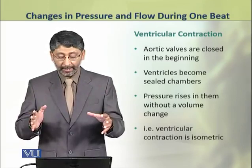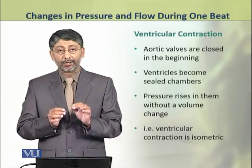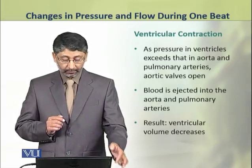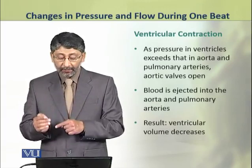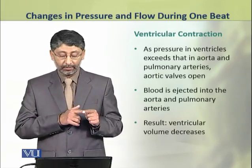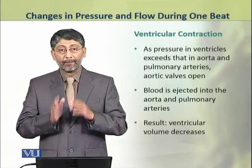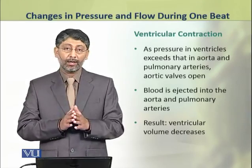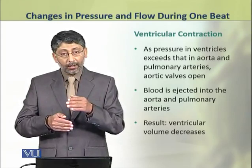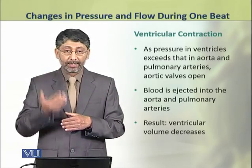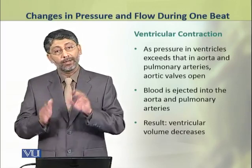The pressure rises in the ventricles without a volume change, meaning the ventricular contraction is isometric. As the pressure in the ventricles exceeds that of the aorta and pulmonary arteries, the aortic valves open. As a result, blood is ejected into the aorta and pulmonary arteries, flows into the systemic and pulmonary circuits, and ventricular volume decreases.